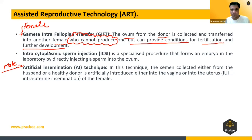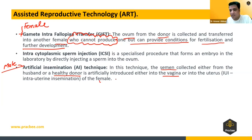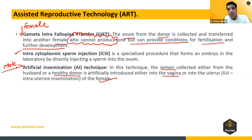Artificial insemination is used in the case of a male who is not able to fertilize the ova. The semen is taken from the male or from a healthy donor and is introduced either into the vagina or into the uterus, leading to fertilization.